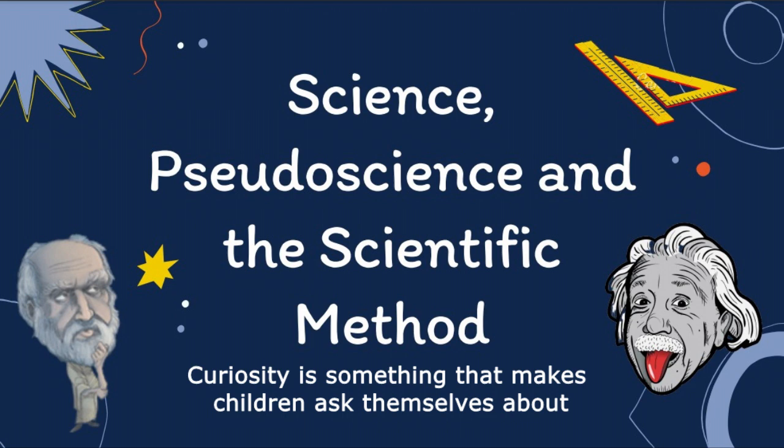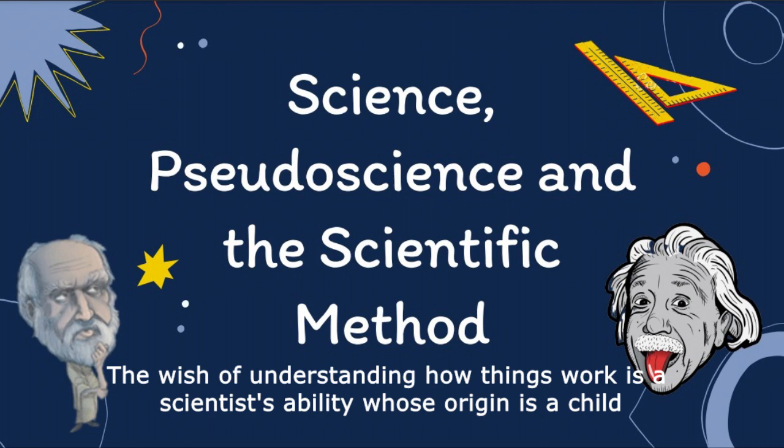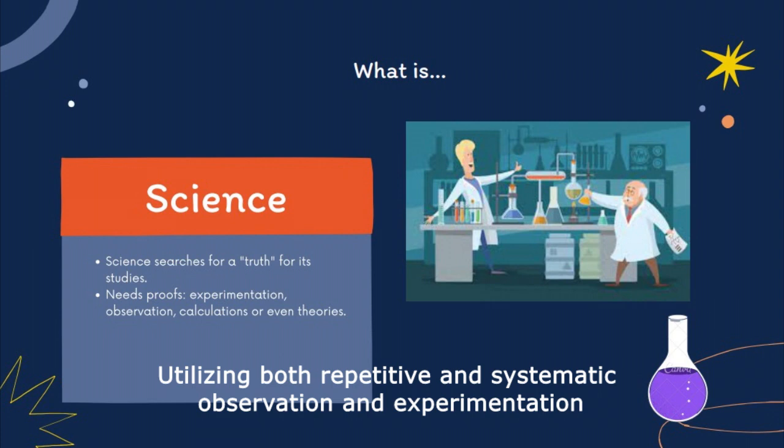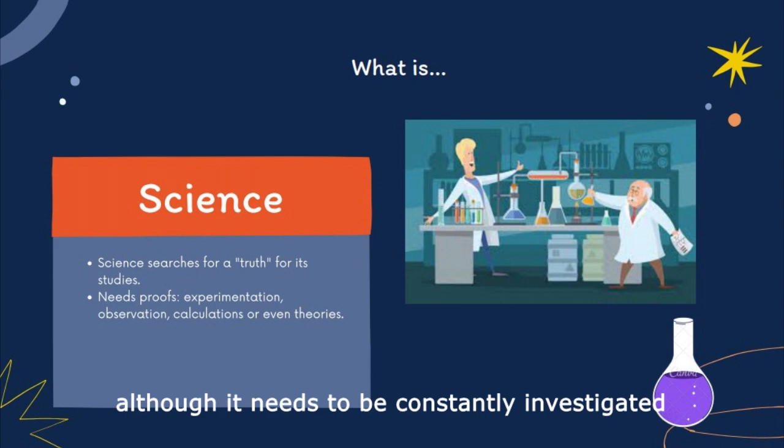Curiosity is something that makes children ask themselves why the sky is blue or why water freezes. The wish of understanding how things work is a scientist's ability, whose origin is a child. Just like Marie Curie once said, a scientist in his laboratory is not a mere technician — he is also a child confronting natural phenomena that impress him as though they were fairy tales. Utilizing both repetitive and systematic observation and experimentation, science searches for truth in its studies, although it needs to be constantly investigated, since it's impossible to state an absolute truth in the scientific world.